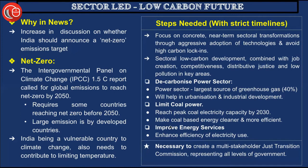We should improve energy services and enhance efficiency of electricity use, since a lot of power is lost specifically during electricity distribution. We should use electricity more efficiently and look for more renewable sources like hydropower and solar power for production. The article also says it is necessary to create a multi-stakeholder just transition commission representing all levels of government and different sectors, which will increase coherence and interconnectivity across government sectors.